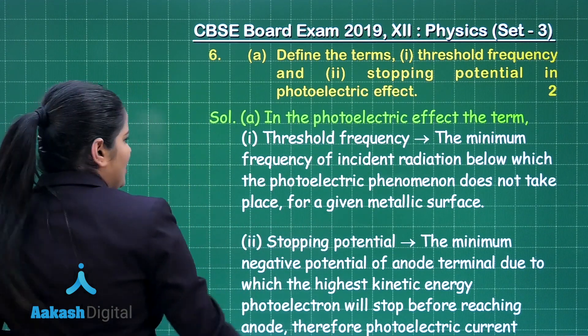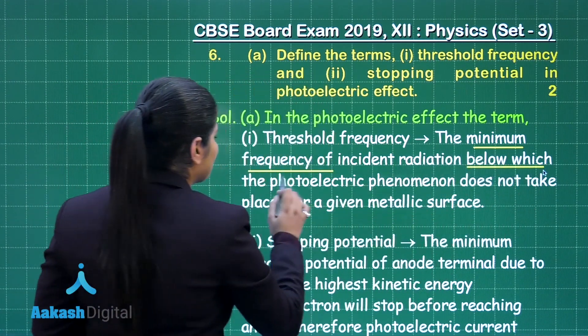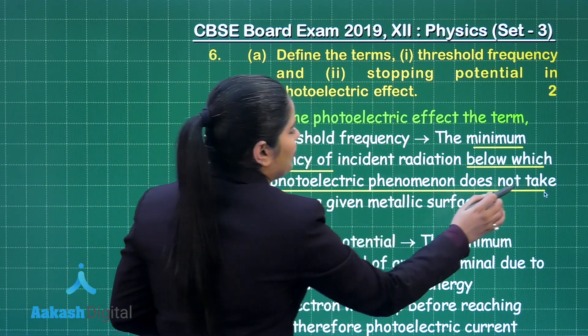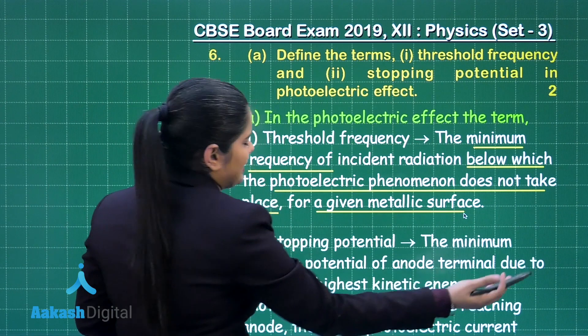What is threshold frequency? That is the minimum frequency of incident radiation below which the photoelectric phenomenon does not take place for a given metallic surface.